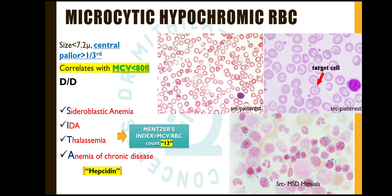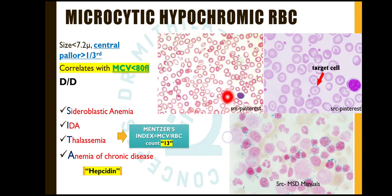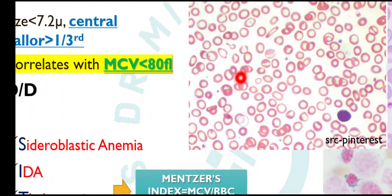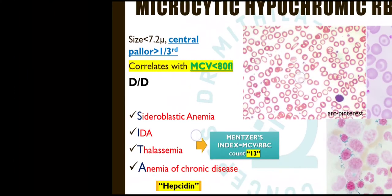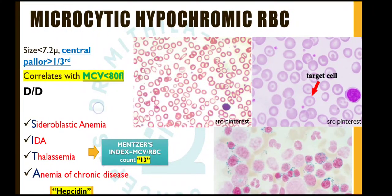Next we come to the first variation of normal RBC: microcytic hypochromic RBC. The size of the RBC becomes less than normal. We determine this by comparing it with the nucleus of the small lymphocyte — it will be lesser in size. These are the microcytes — small-sized RBCs. Hypochromia means central pallor more than one third of the cell diameter. A microcytic cell corresponds with a mean corpuscular volume (MCV) of less than 80 femtolitres. The normal MCV is 80 to 100 femtolitres.